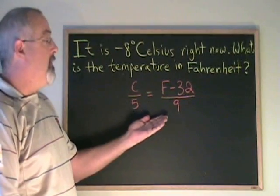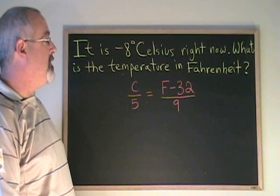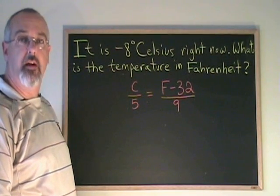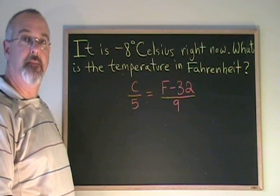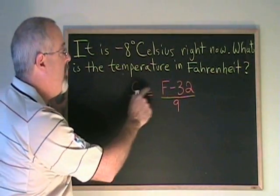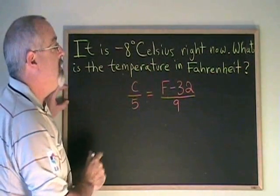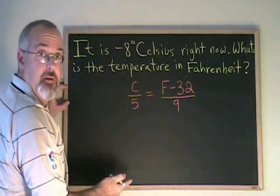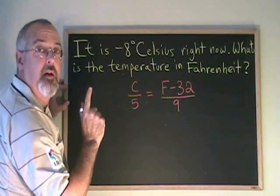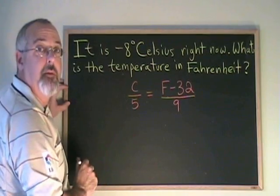We are given a formula that we can use to solve this problem. This formula is used to convert Celsius to Fahrenheit or Fahrenheit to Celsius. The trick with formula problems is that they have more than one variable. You are given information that allows you to replace all variables with numbers except for one. Then you will use your algebra skills to solve for that one remaining variable.